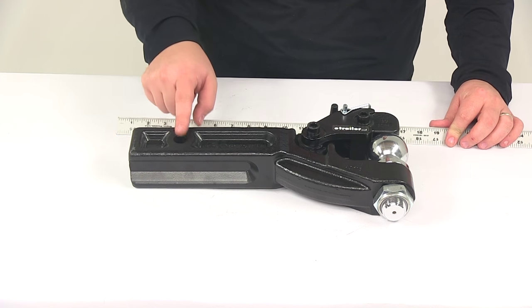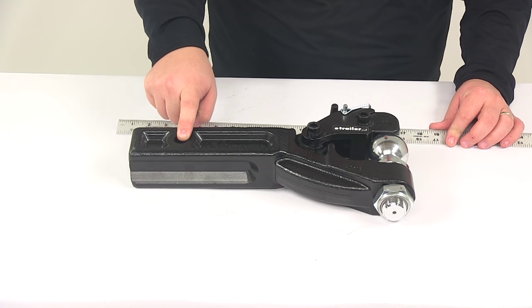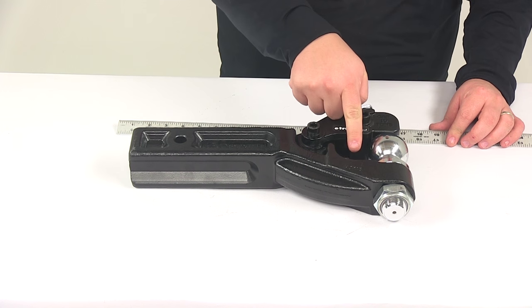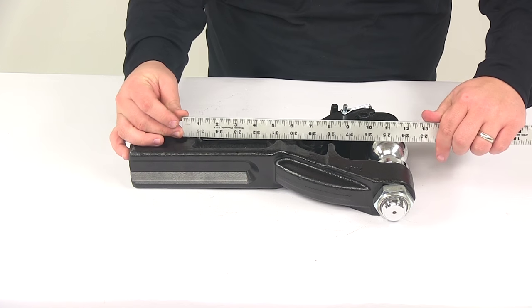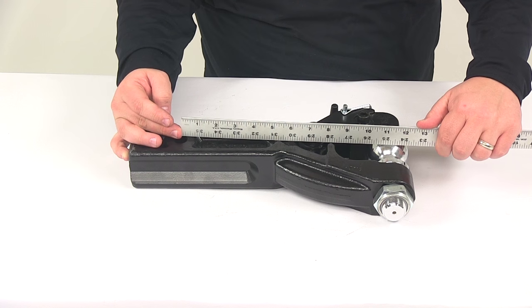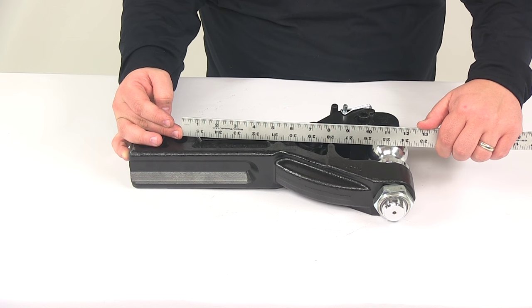The distance from the center of the hitch pinhole to the center of the pintle hook, so measuring to the center of the open area, is going to give us a measurement of about 9.5 inches.